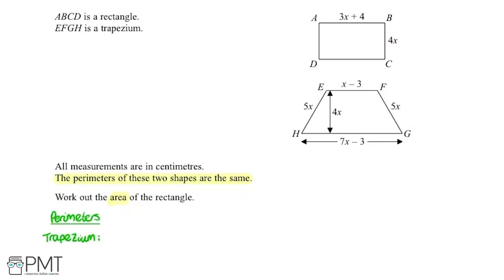First, the perimeter of the trapezium. We're going to add up all the lengths of the sides. So we've got x minus 3 plus 5x plus 7x minus 3 plus 5x. And we can do what's called collecting like terms.